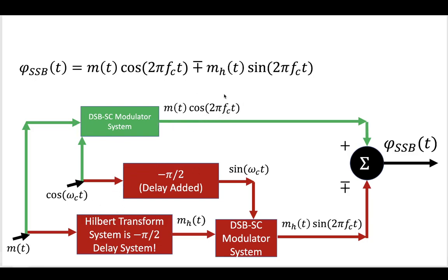The second branch, the red branch, corresponds to the second term here. You have a cosine wave. The same cosine wave with your carrier frequency for the first system goes in and passes through a phase delay so that you get a sine wave at the same carrier frequency.